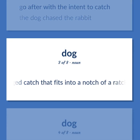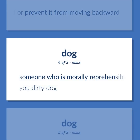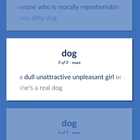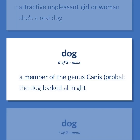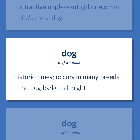A hinged catch that fits into a notch of a ratchet to move a wheel forward or prevent it from moving backward. Someone who is morally reprehensible. You dirty dog. A dull unattractive unpleasant girl or woman. She's a real dog. A member of the genus Canis, probably descended from the common wolf, that has been domesticated by man since prehistoric times, occurs in many breeds. The dog barked all night. Metal supports for logs in a fireplace.